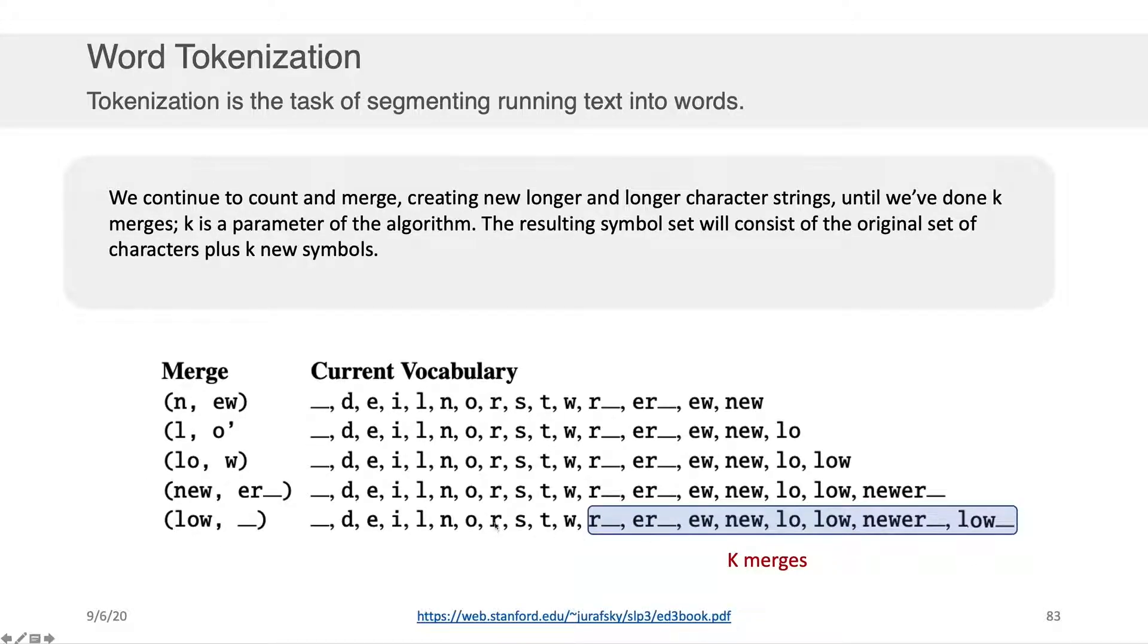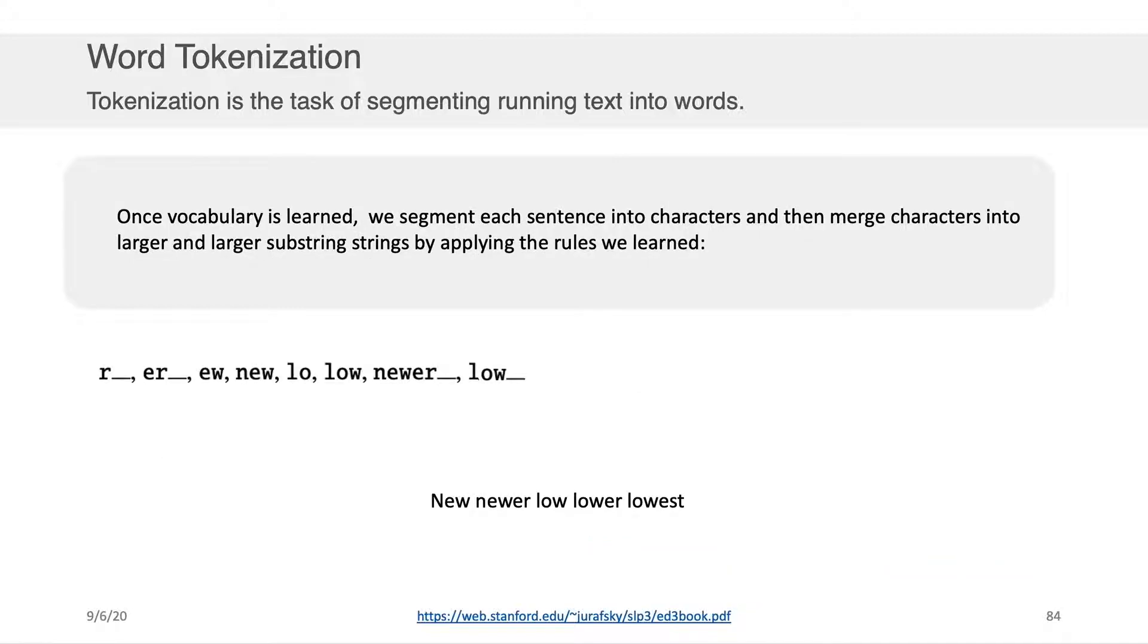We get r underscore er, then we get ew, we did these three together. If we keep running this forward, we'll then get new, low, low, newer, and low. And the way that this vocabulary that we learn is used to tokenize new sentences is by actually following the merger, the merging procedure that's implied by this set of new vocabulary entries we learned. So for example, let's assume we have the sentence on the bottom, new, newer, low, lower, lowest.